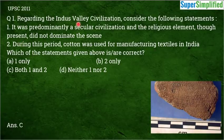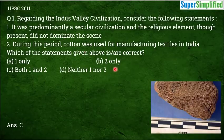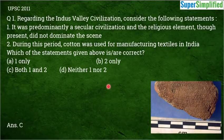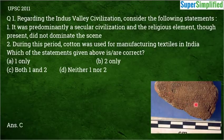Both statements are correct. The Indus Valley Civilization was not predominantly religious. Regarding Statement 2, cotton was actually known to India long back. People in the Indus Valley Civilization knew about cotton and used it to weave textiles. Since cotton is biodegradable, it is very difficult to find cotton fossils directly, but we have indirect evidence — cotton textile impressions found on burnt mud bricks from that period.